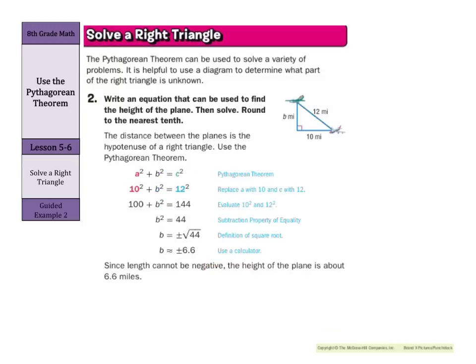In this example, looking for the height of the airplane, it's a bird, it's a plane. We have the right angle here, our legs are these two sides here, and our hypotenuse is opposite the right angle, which is this 12. And so this time, we know our A is 10.